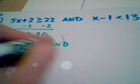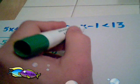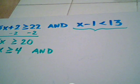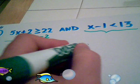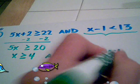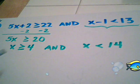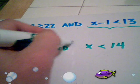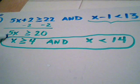And this is a very easy inequality to isolate x by just adding one to both sides: x is less than 14. So we basically made our compound inequality a little bit simpler.